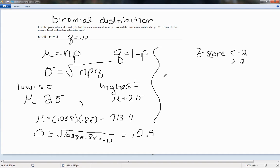So now our lowest value, which would correspond to something that had exactly a z-score of negative 2, would be equal to 913.4, our mean, minus 2 times our standard deviation, 10.5. So we would do 913.4 minus 2 times 10.5. So our lowest usual value would be 892.4. Anything less than that would be unusual.